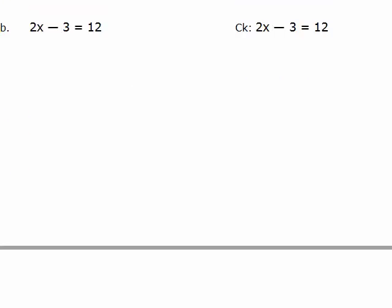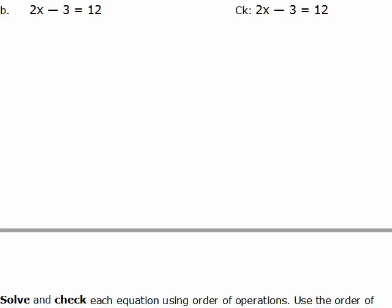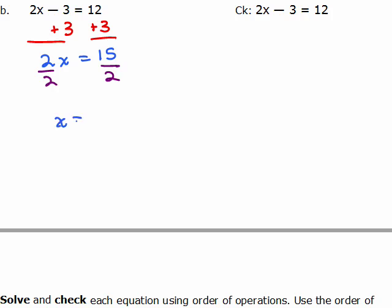Okay, let's go on to b. What we could do here is add 3 to both sides to begin, so that we could isolate the x term, 2x over here. 2x equals 15, and now divide both sides by the coefficient of x, which is 2, to get x equals 15 halves. If you would like to write that as 7 and a half or 7.5, that's also fine.